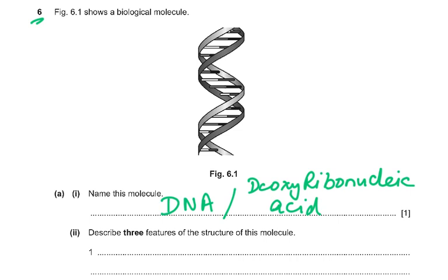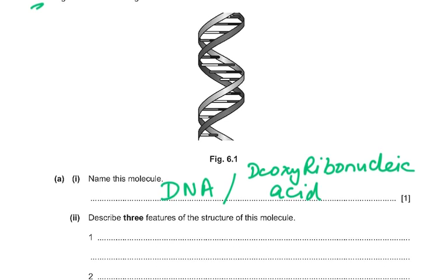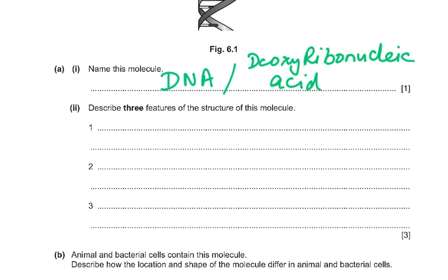Describe three features of the structure of this molecule. You can look at the diagram for clues. It has double strands, also described as a double helix. It is made up of nucleotides. The strands are held together by bonds between the bases, and there is complementary base pairing: A always pairs with T, and C always pairs with G. It is made up of the elements carbon, hydrogen, oxygen, nitrogen, and phosphorus — that is why it has the sugar-phosphate backbone.